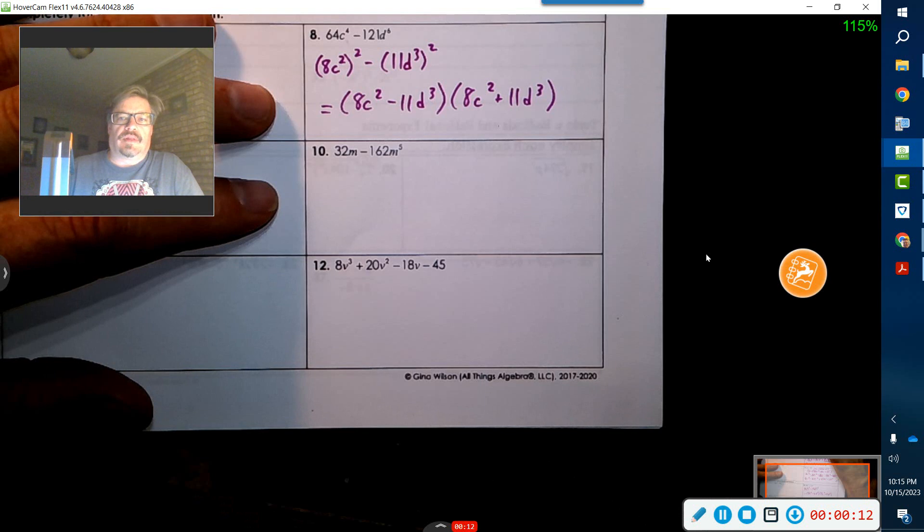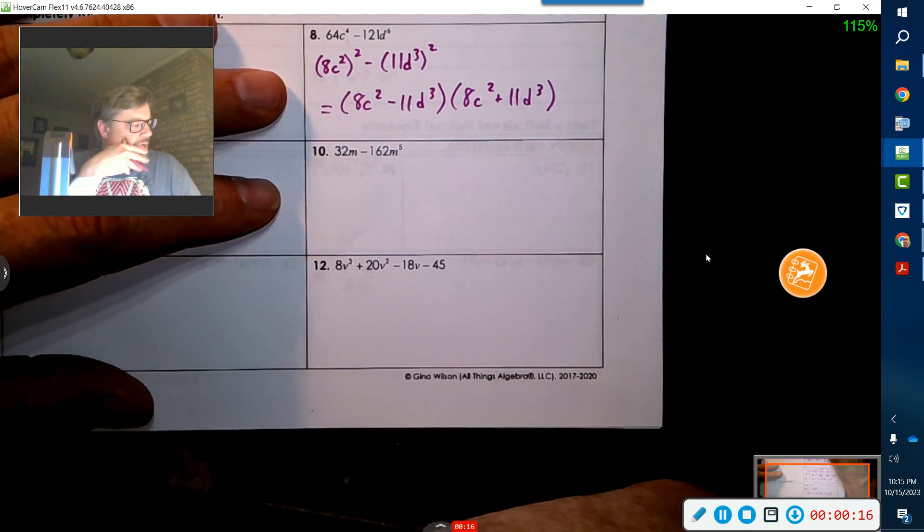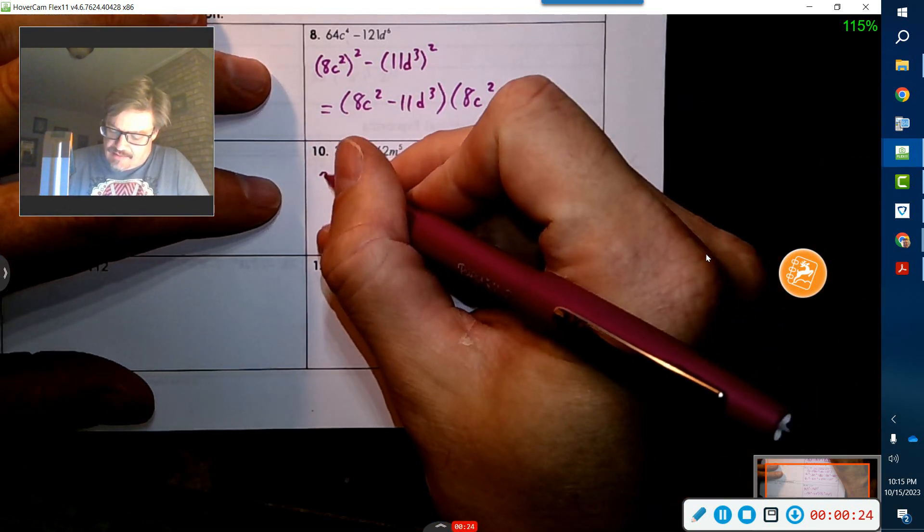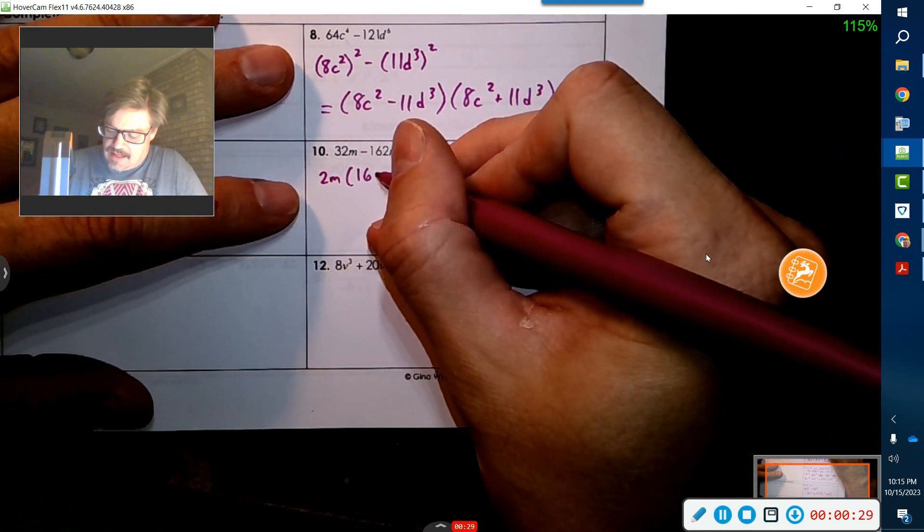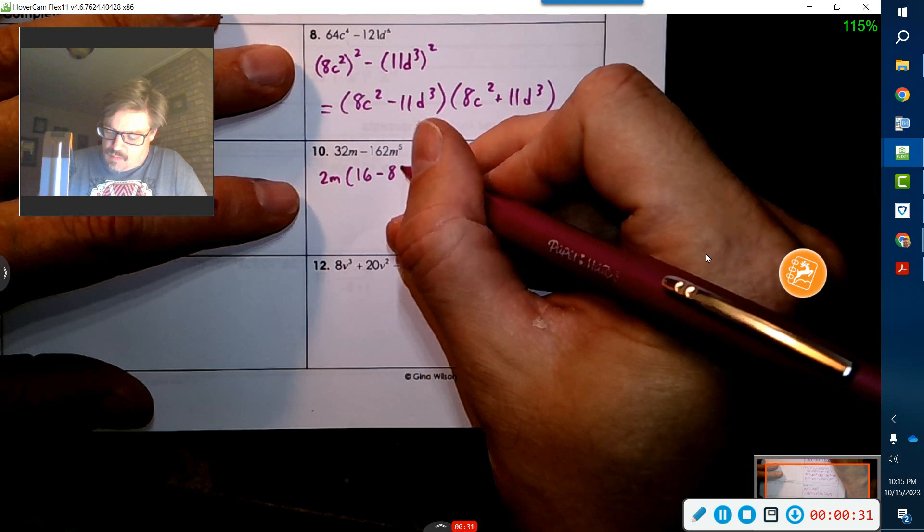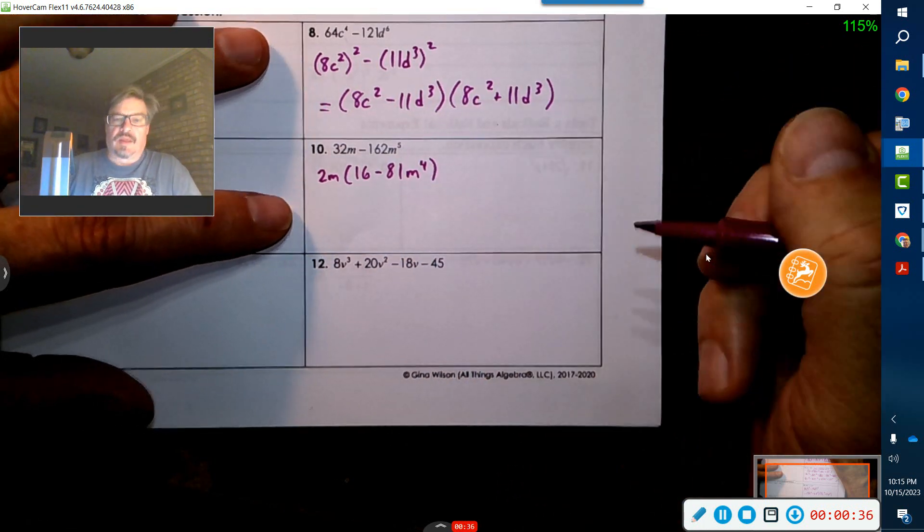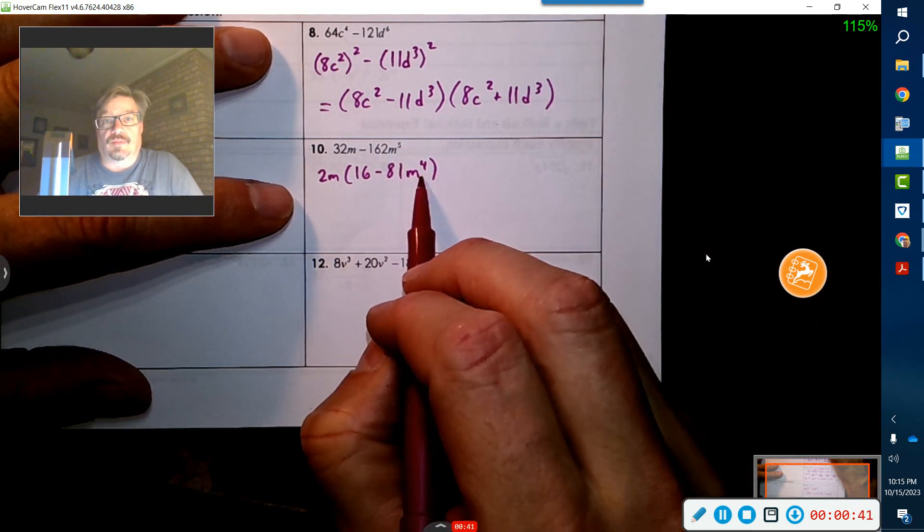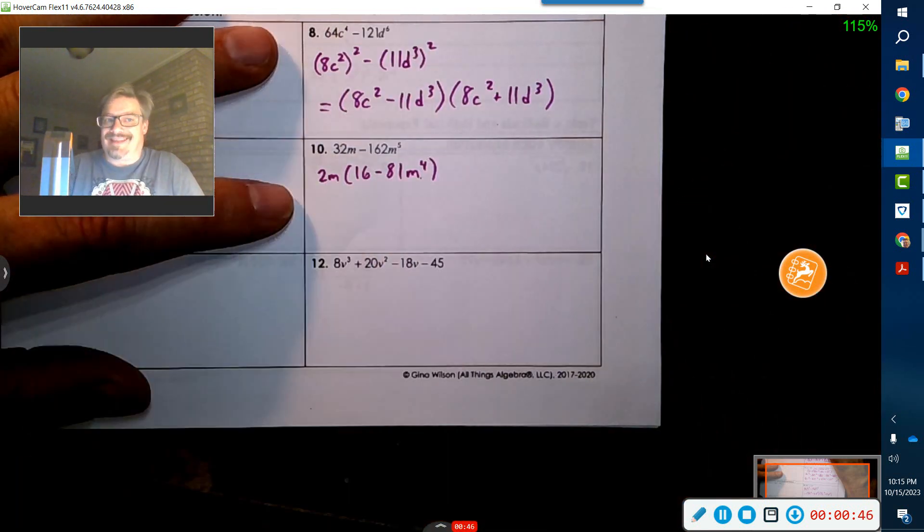We've got GCF. Okay, GCF. Definitely a 2, not a 4. So let's just go 2, and I can definitely take out an M. So that's going to be 16 minus 81, and then I've got M to the 4th. Okay, so that's good. Now, that's a perfect square, that's a perfect square, and that's a perfect square. So this is the difference of two squares again, but the 2M is just a tag along.